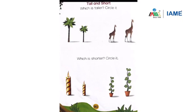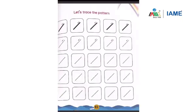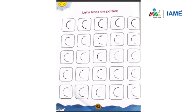This is page number 80 in your course book. You have to find out the tall and short objects. You should also complete page number 61 and page number 62 in your activity book to practice slanting line and curve.